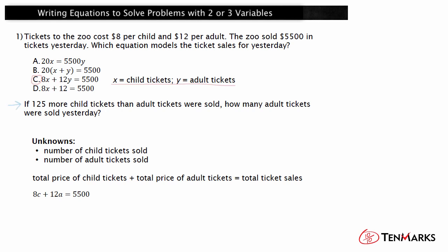Now let's look at the next part of the problem. If 125 more child tickets than adult tickets were sold, how many adult tickets were sold yesterday? Use X as the number of child tickets and Y as the number of adult tickets, consistent with the first equation. The statement '125 more child tickets than adult tickets were sold' can be rewritten as: there are more X than Y, so 125 must be added to Y in order to get X. The equation is X equals Y plus 125. This equation and the previous equation form a system of equations that can be used to determine the values of X and Y.